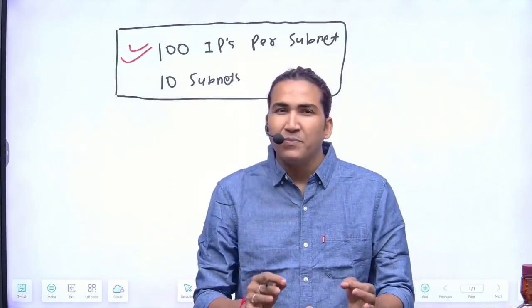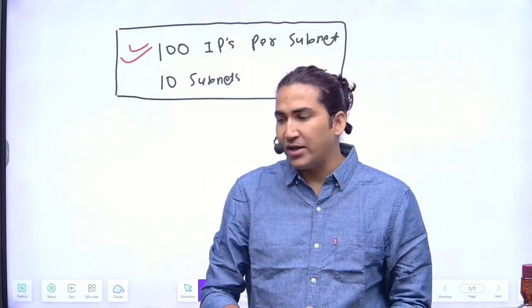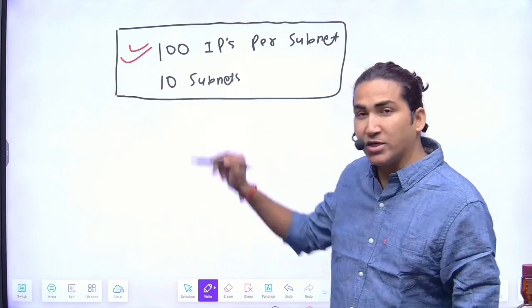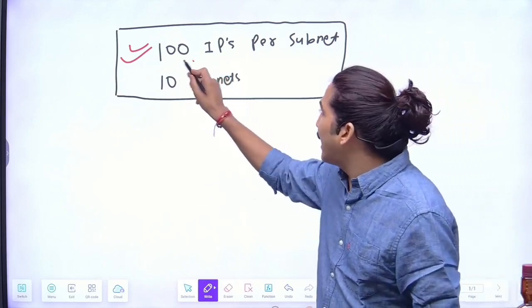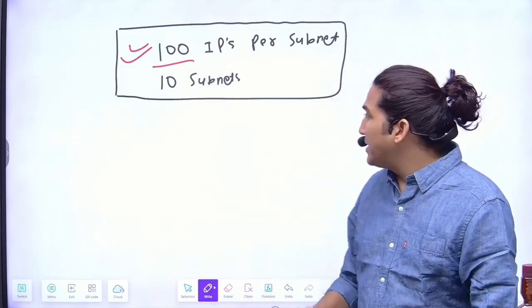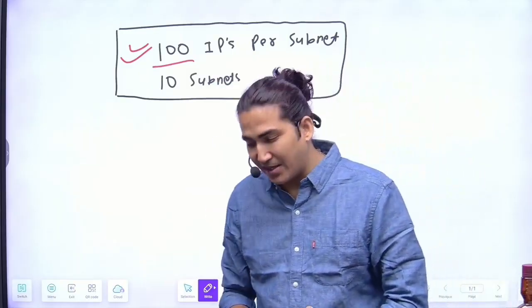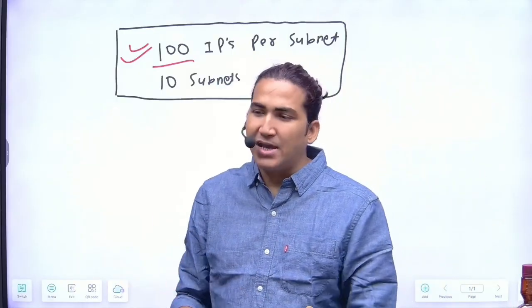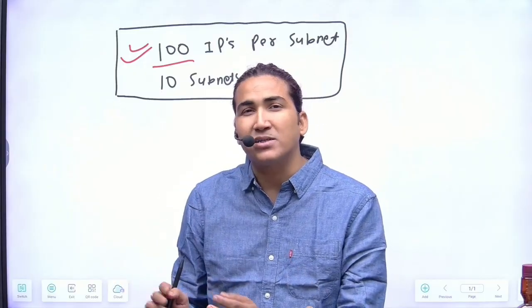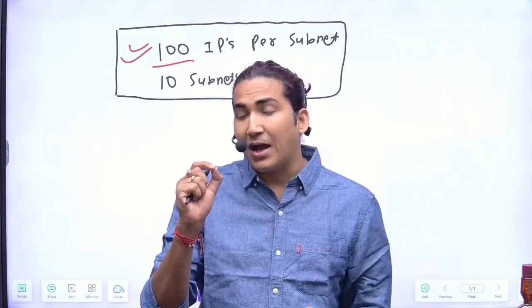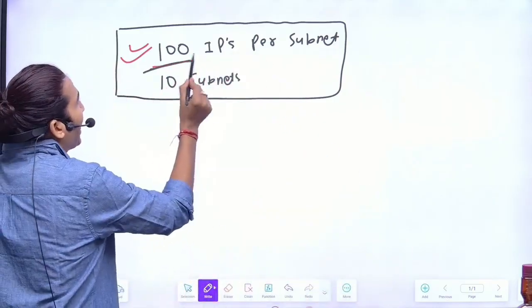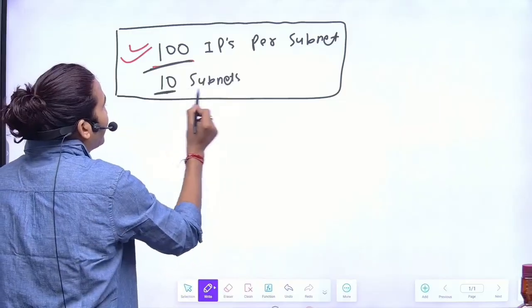Let's suppose in the company 10 departments are there, or in a building there are 10 floors. At each floor there are 100 users. They need 100 IP addresses in one department or you can say in one subnet. If there are 10 departments and in each department I have 100 users, that means I need 10 subnets and 100 valid IPs per subnet. This is the requirement: 100 IPs per subnet and 10 subnets.